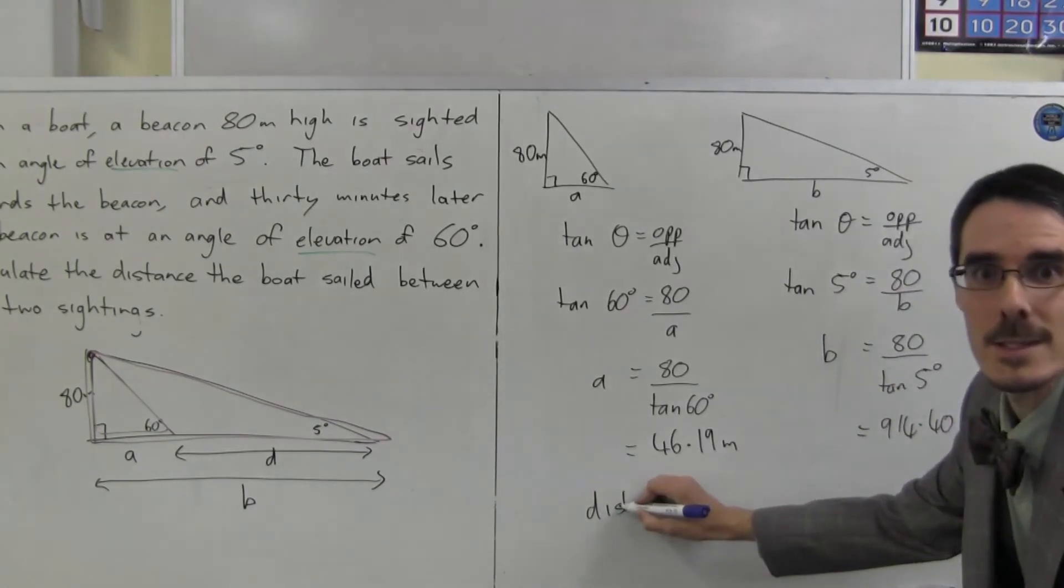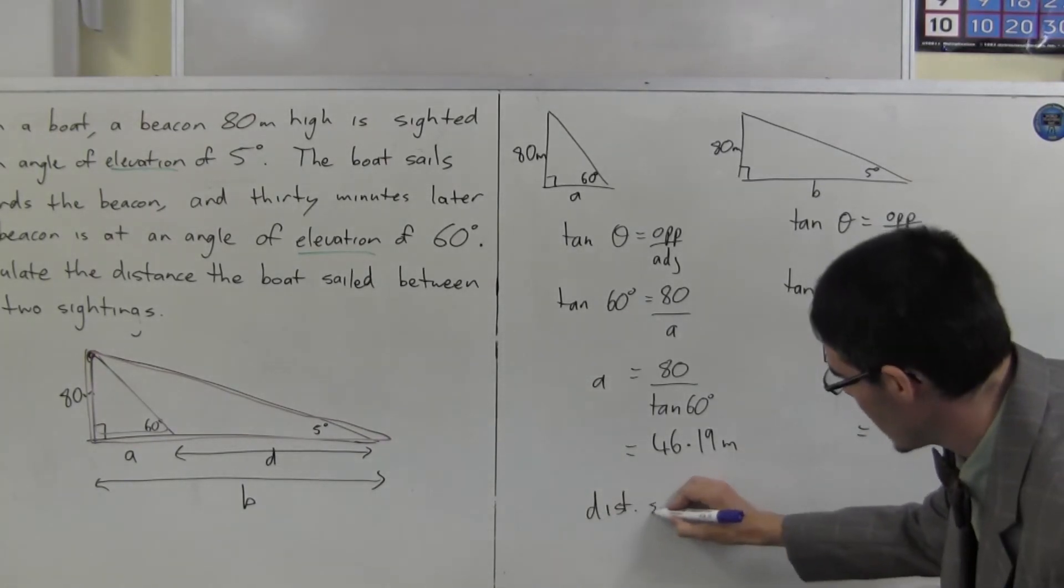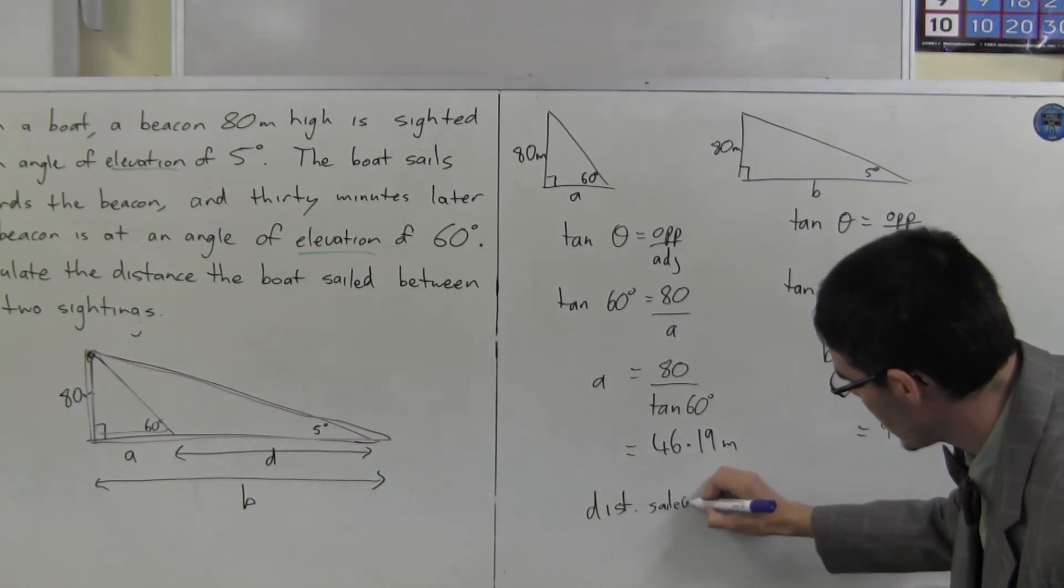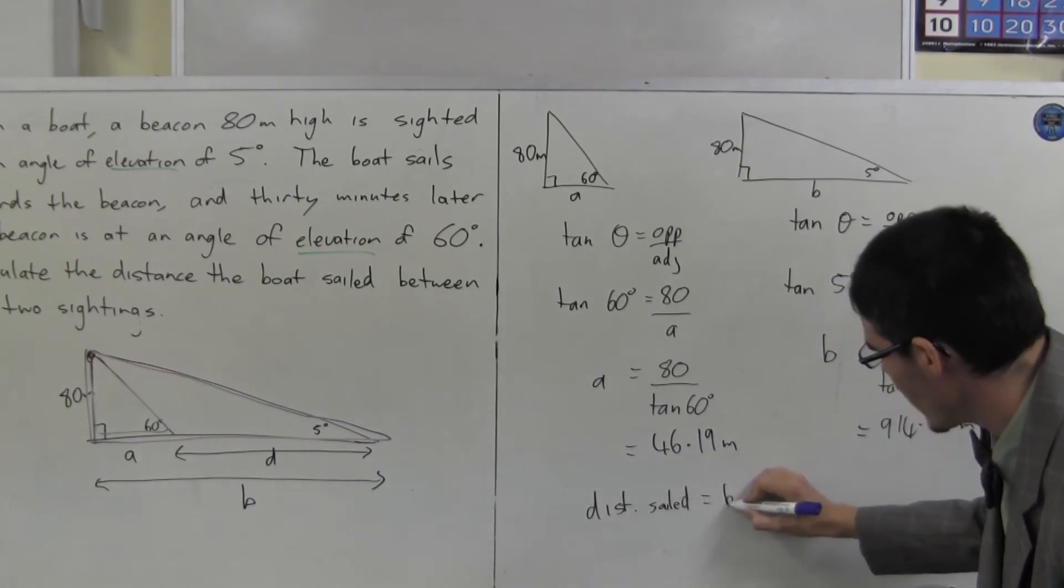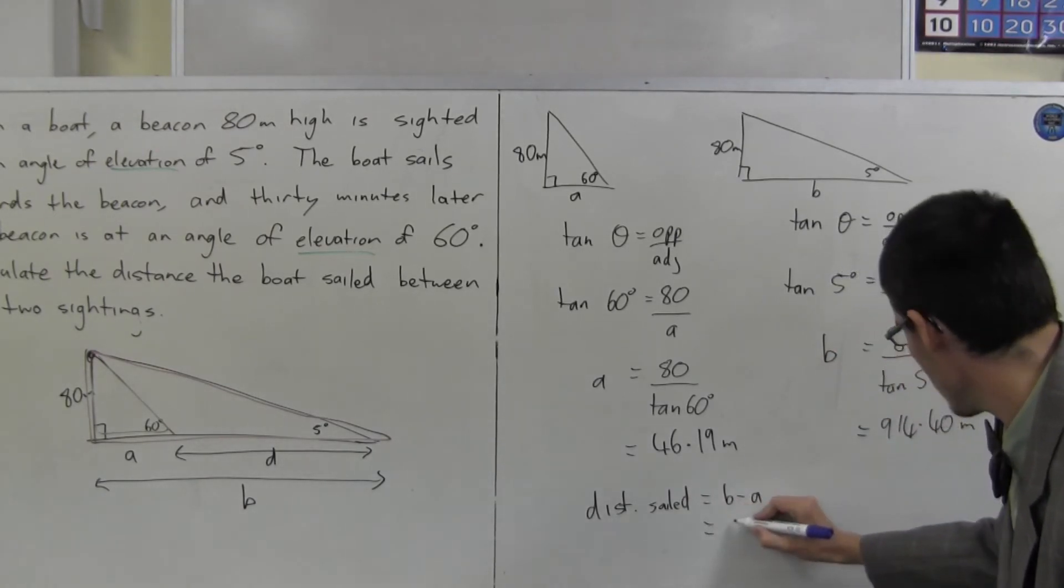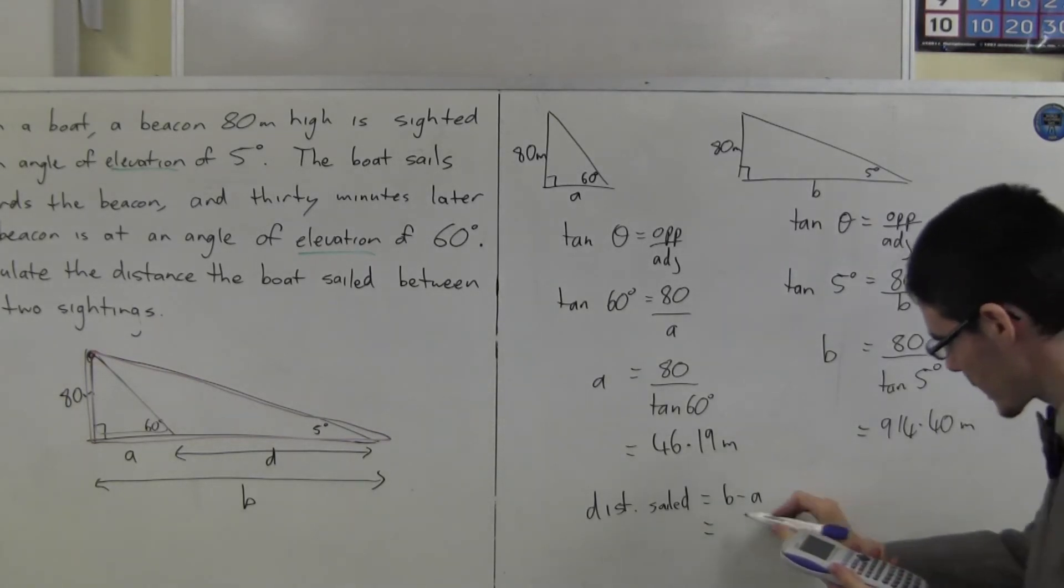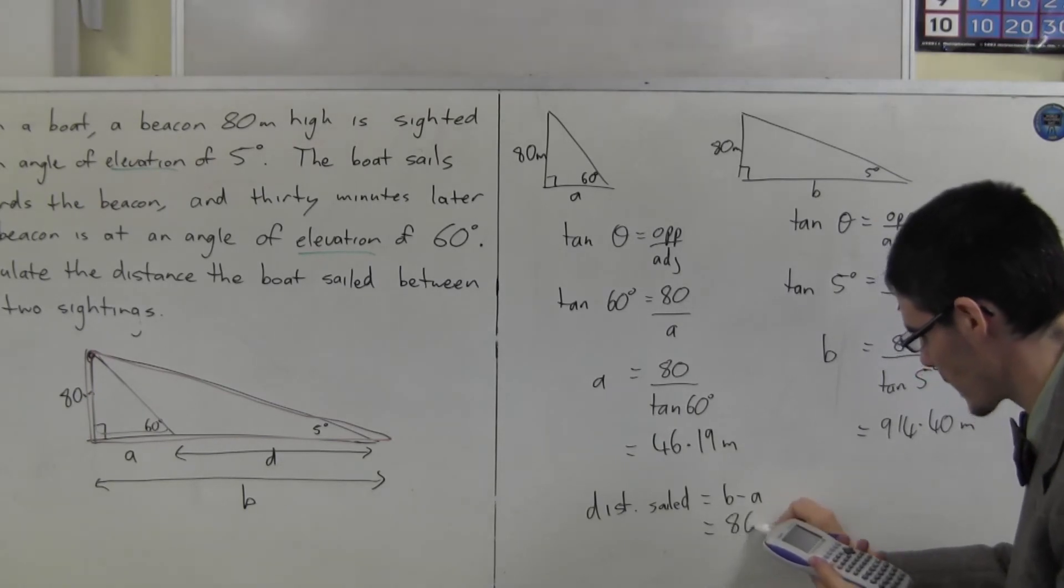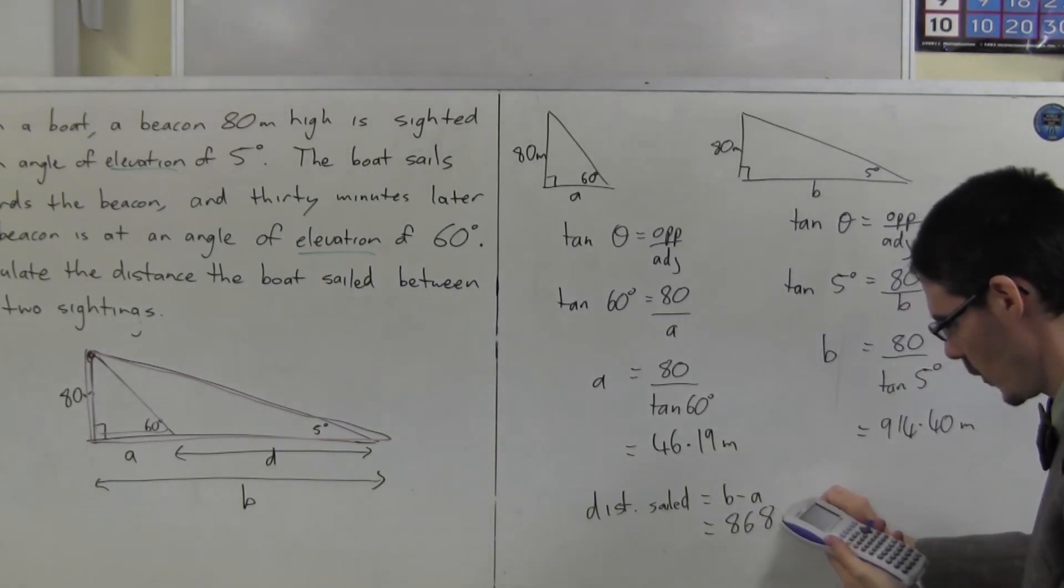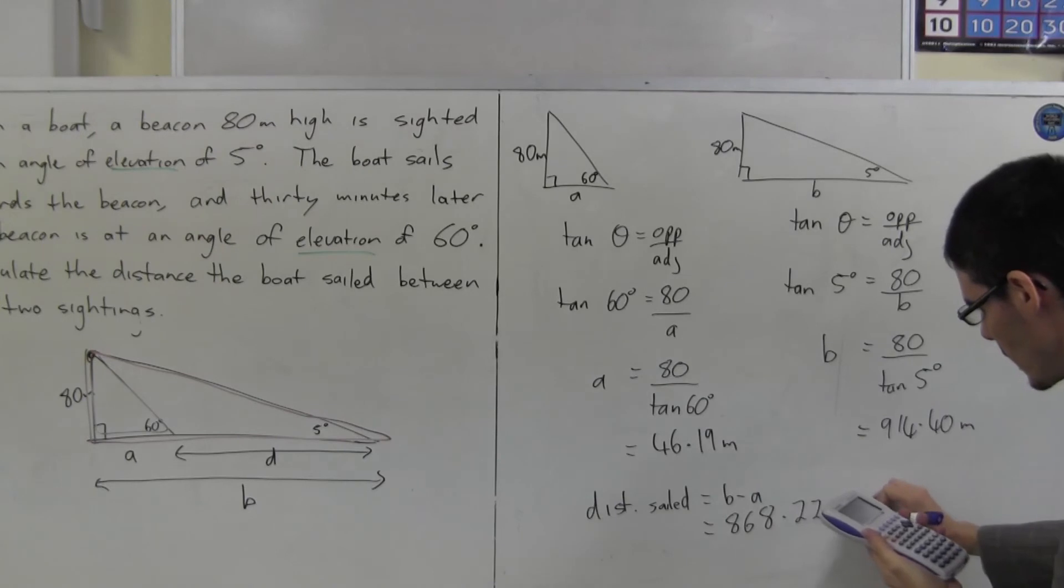So, distance, can you still see that? Yes. Distance sailed is B minus A, which is 914.40 minus 46.19. It's 868.22 metres.